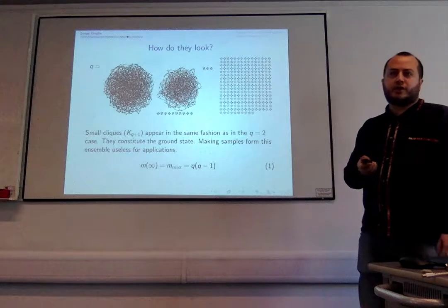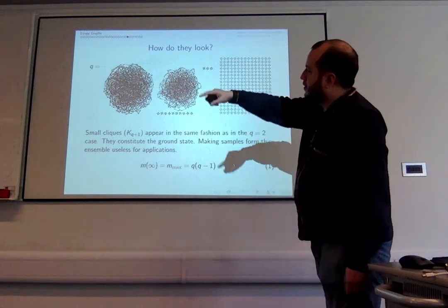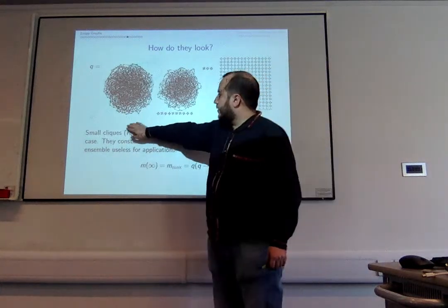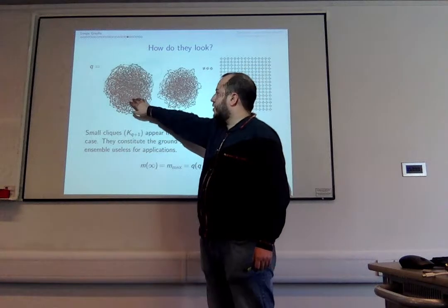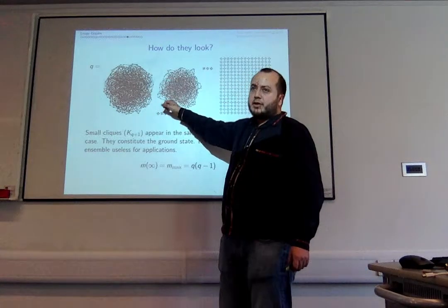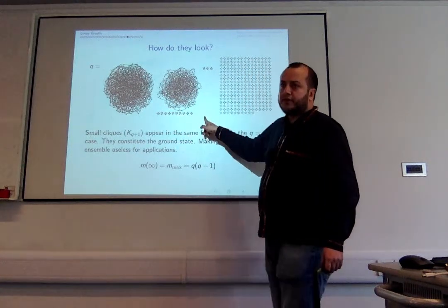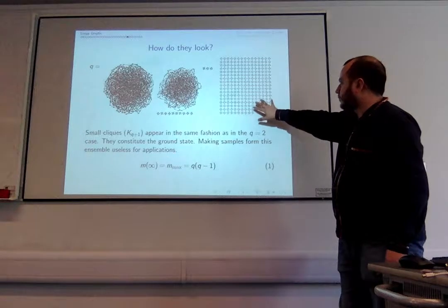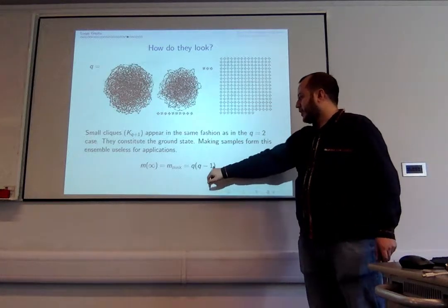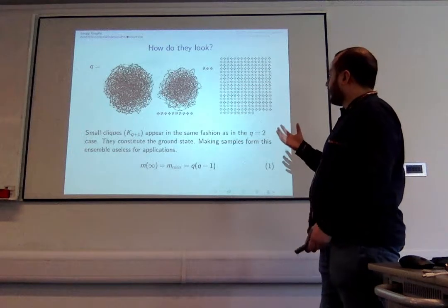For q=3 (three-regular graphs), it looks really similar at first. When alpha is small you have more loops than a typical random three-regular graph. But at some point, asking for more loops means you start getting disconnected small cliques, and the ground state is just every node in a small clique. The triangle density there is just a few times what you'd expect.